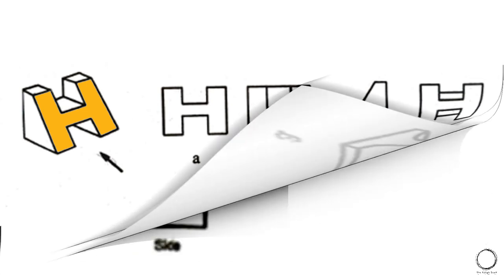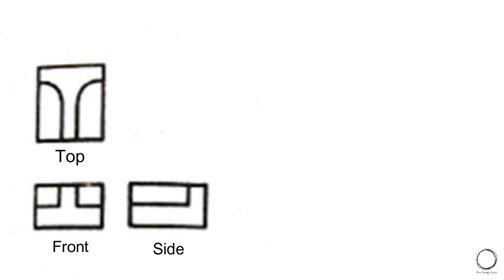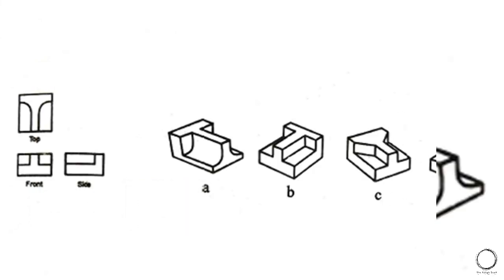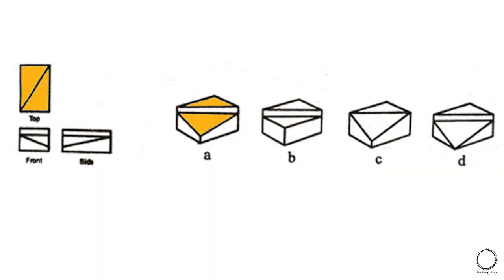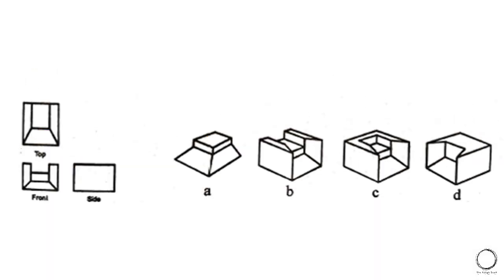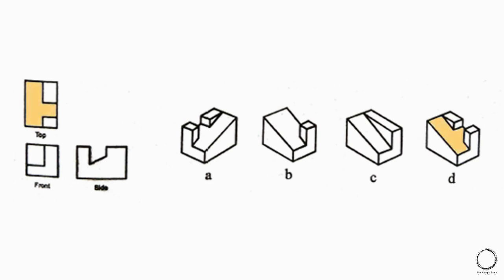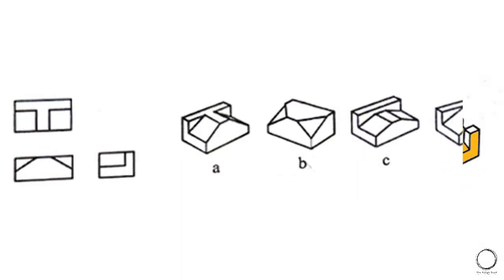Now let's look at the opposite type of question: given the top, front, and side 2D surfaces, you need to select the correct 3D object. Start with the top view — the markings depict the front, side, and top — and the right answer is option D. Always start with the top view, then the front, then the side, checking all three. Look for planes and lines in the object that are similar across all sides. The right answer is option B in the next question. Checking top view, front view, and side view, the right answer is option D, and inclined surfaces should not cause confusion.